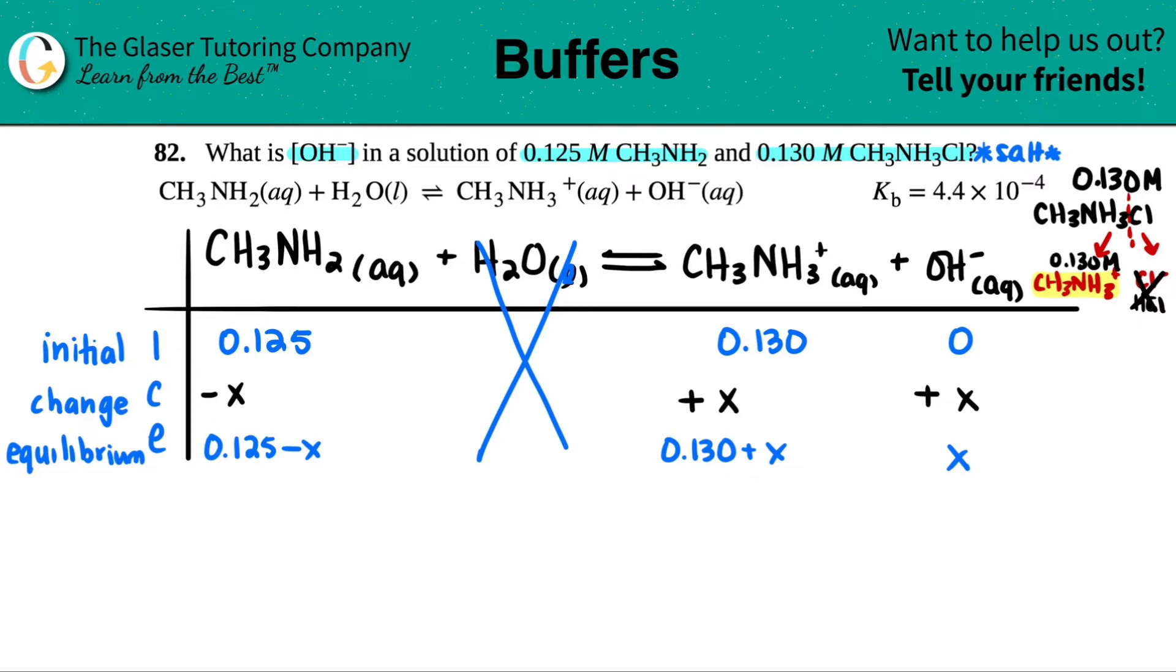Now we have all of our equilibrium values to plug in for our Kb expression. They gave us a Kb, so let's set that up. Kb equals concentration of products divided by reactants. There's two products, so they're being multiplied by each other and one reactant. We got OH minus and CH3NH3 plus over CH3NH2 as my reactant. And this is why it's so much easier to use this because they're searching for the hydroxide. This is it. So we're getting closer.